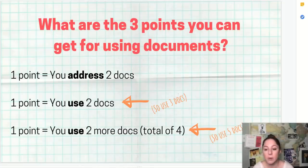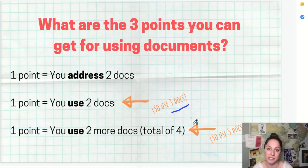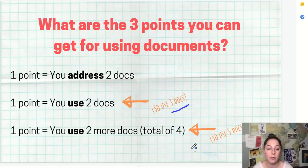One thing to notice is that any time it says you need two documents to get credit, I highly suggest you actually use three documents. That way, if you mess one up, you're safe. Same thing — if you're going for this third point where you need to use four documents, I highly recommend you actually use all five.